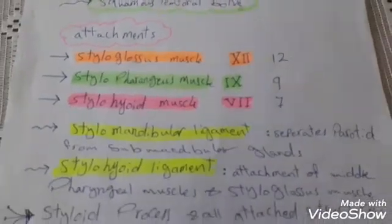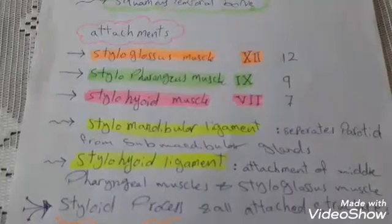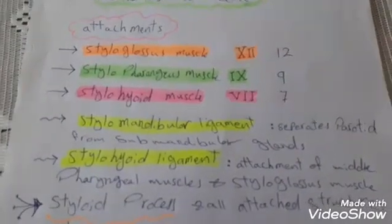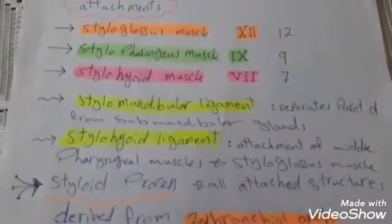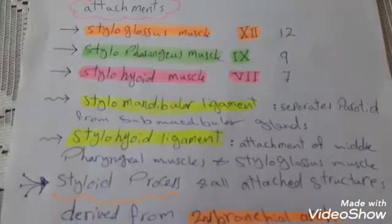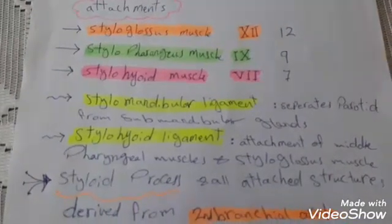The stylomandibular ligament separates parotid from submandibular glands. Stylohyoid ligament gives attachment of the middle pharyngeal muscles and styloglossus muscle.